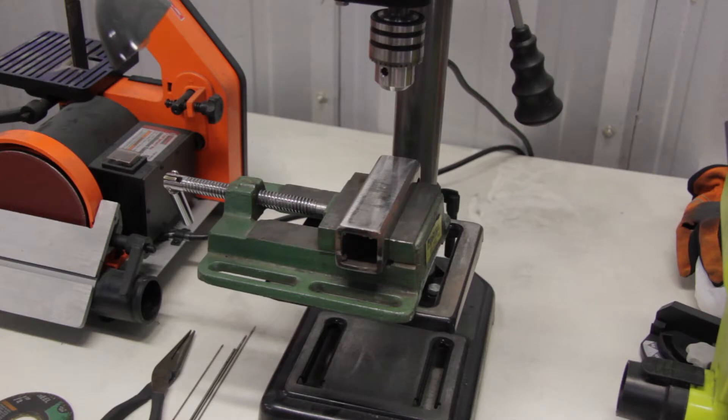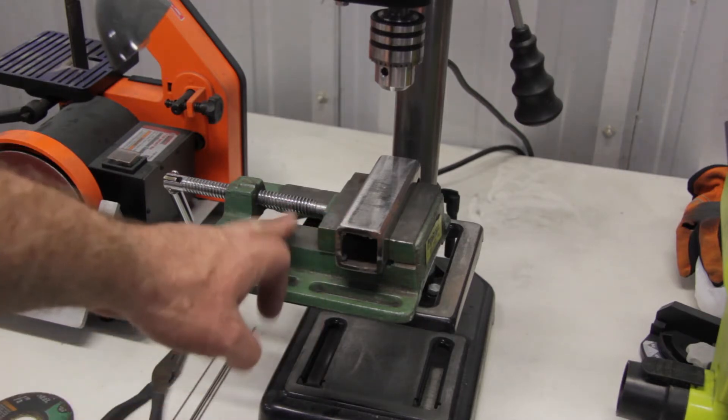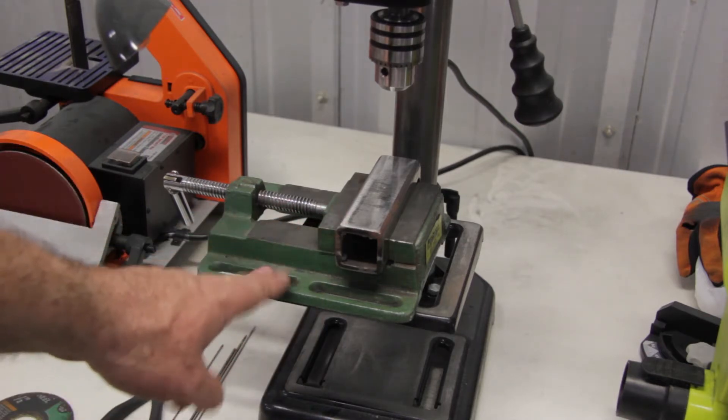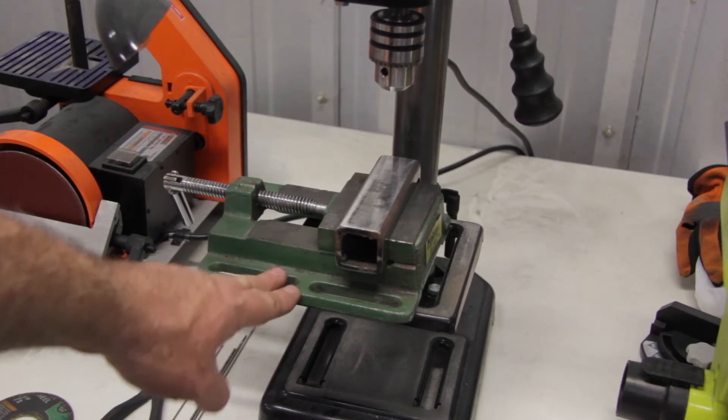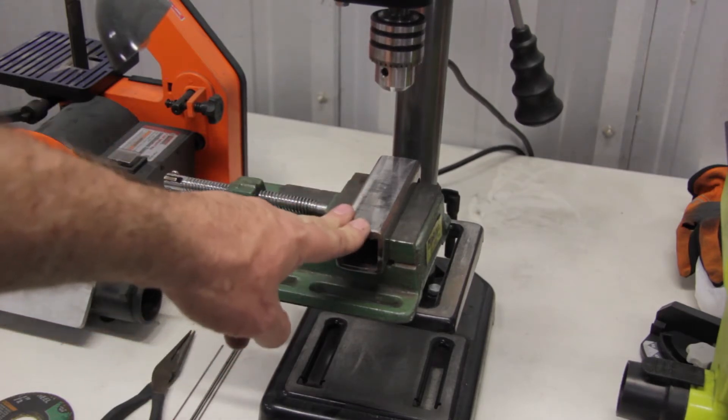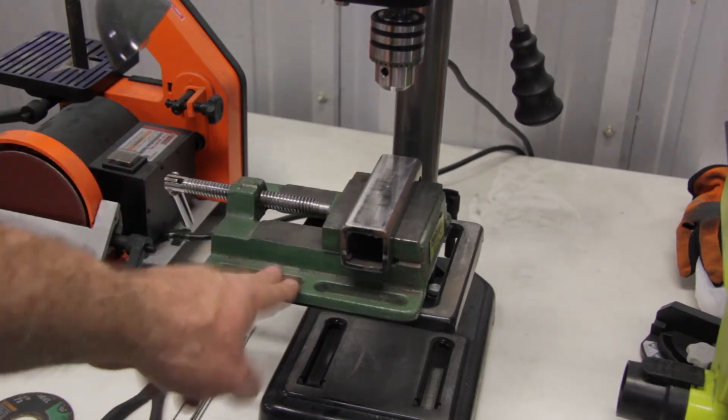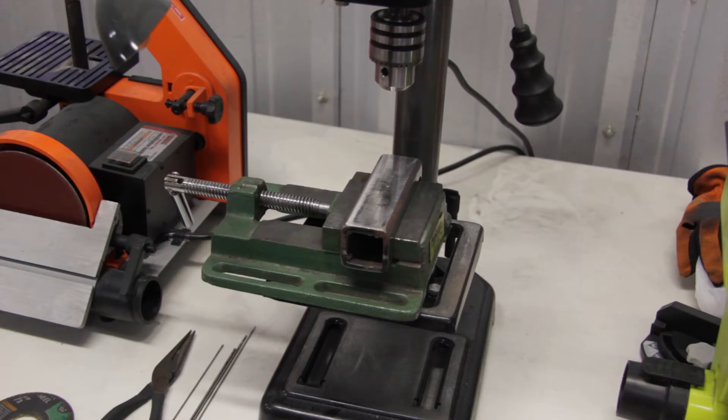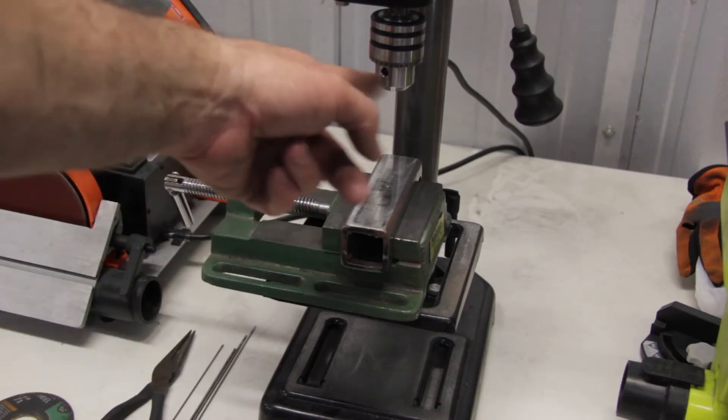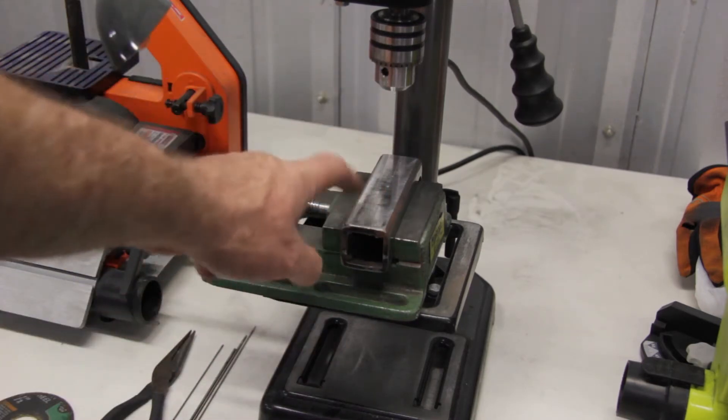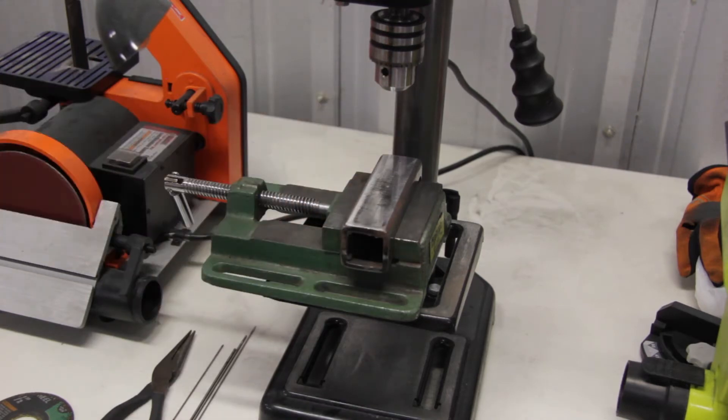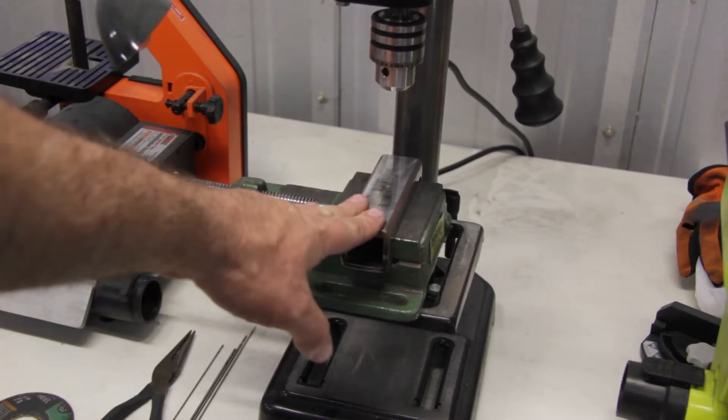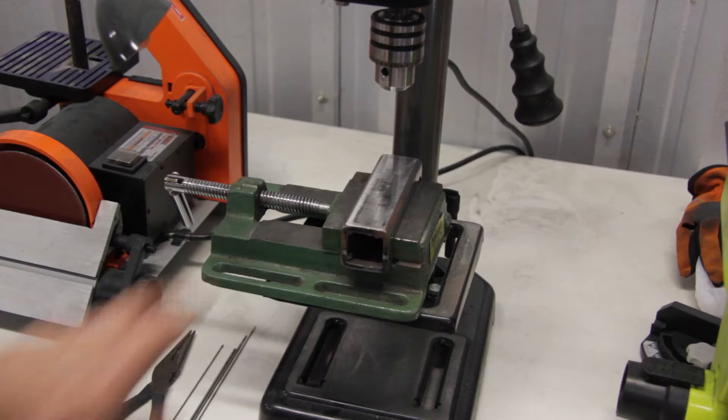We're over at the drill press. Notice I have the square tube mounted in a vise. Whenever you're drilling metal, or in fact any material, always securely place the material you're going to drill into a vise to hold it. If you hold it by your hand, there's a very good chance that when you're drilling, the drill can get caught on the metal and rip that material out of your hands and start swinging it around, which could come off the drill and injure yourself. So always securely mount what you're drilling in a vise.